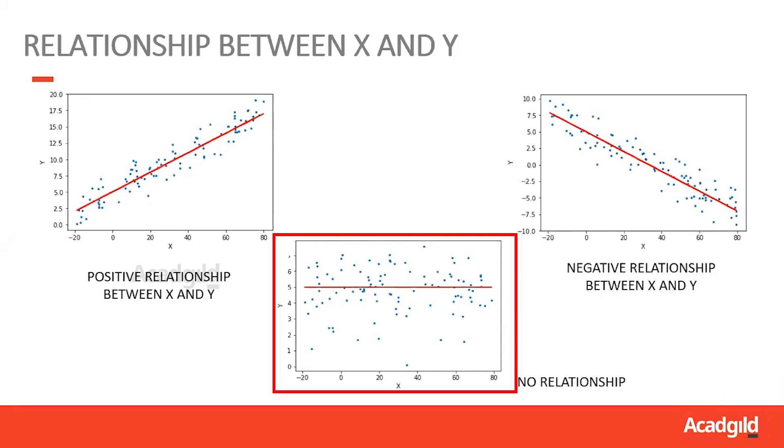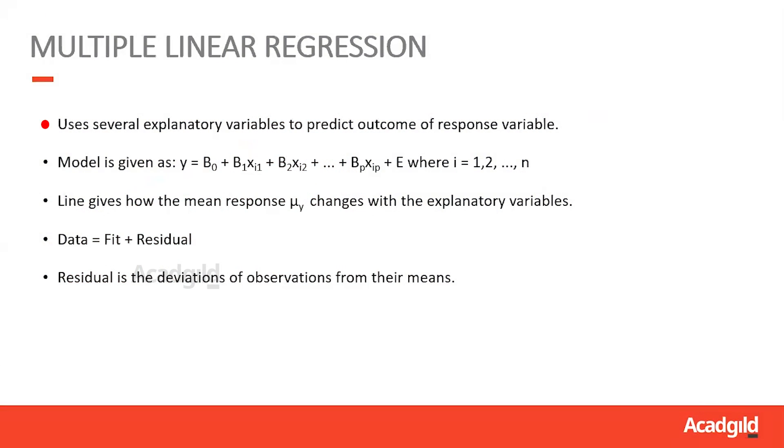So what is multiple linear regression? Multiple linear regression uses several explanatory variables to explain the relationship between the dependent and independent variables. The model is given by y equals b0 plus b1x plus b2x and so on for as many variables as we have to predict the value of y.